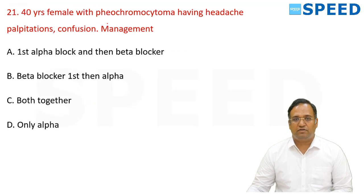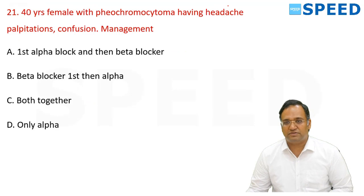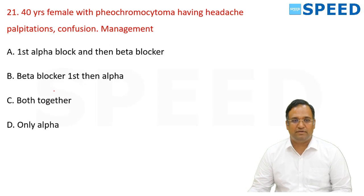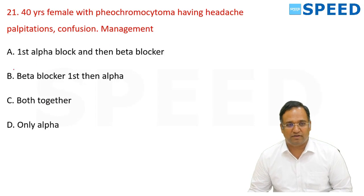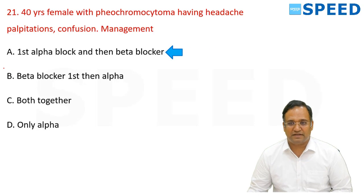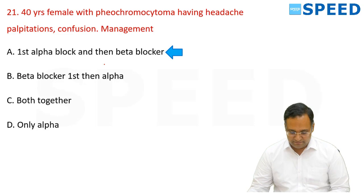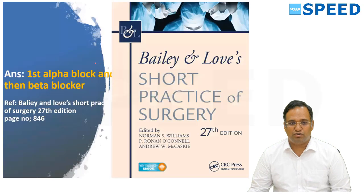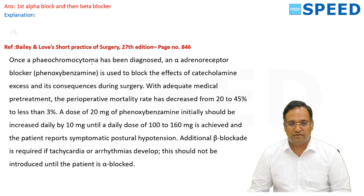A 40-year-old female with pheochromocytoma presenting with headache, palpitation, and confusion — the best management involves giving an alpha blocker first. If the patient then develops tachycardia, a beta blocker is added. The drug of choice is phenoxybenzamine.